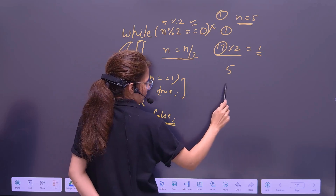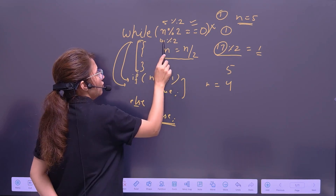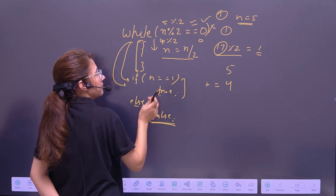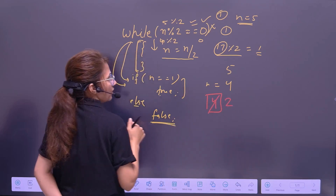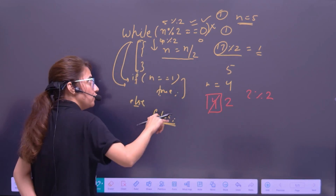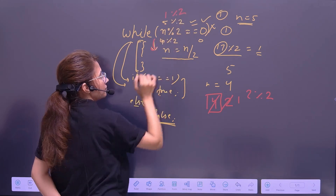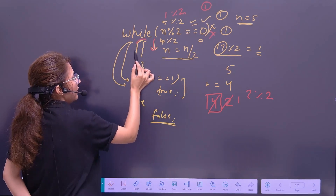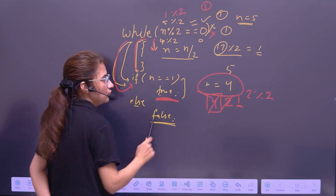Let's check for n = 4. 4 mod 2 — remainder is 0, so condition is true. We enter the loop: n = 4 / 2 = 2. Again, 2 mod 2 = 0, condition is true. n = 2 / 2 = 1. Now, 1 mod 2 — remainder is 1, condition is false. We exit the loop and check: is n equal to 1? Yes, n is 1. So it returns true — 4 is a power of 2.